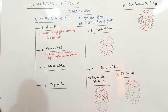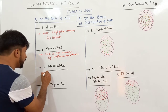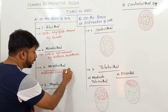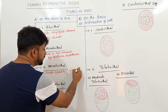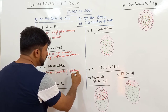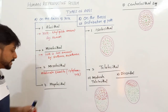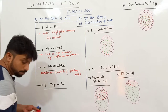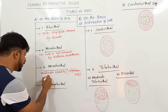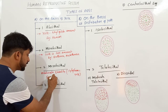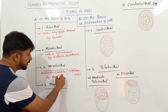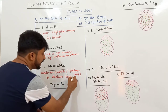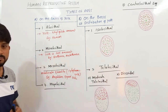Mesolicethal eggs have a moderate quantity of yolk — almost the amount of cytoplasm is equal to the amount of yolk. That's called Mesolicethal eggs. Mesolicethal eggs are found in Amphibians and also in Dipnoi fishes.